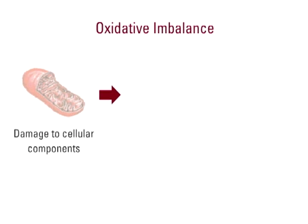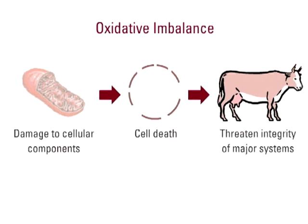Damage to cellular components can result in cell death. Cell death can threaten the integrity of major systems in animals. And when major systems are compromised, efficiency suffers.